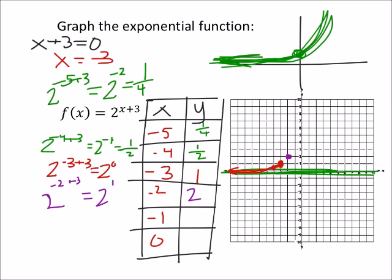What about two to the power of negative one plus three? That's the same as two to the power of two, which is four. So when x is negative one, we get y is four.